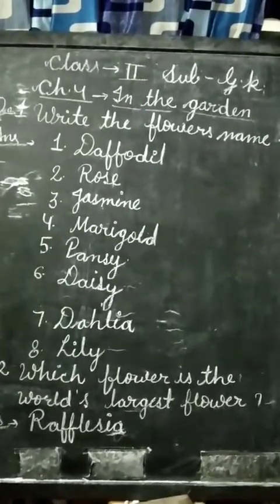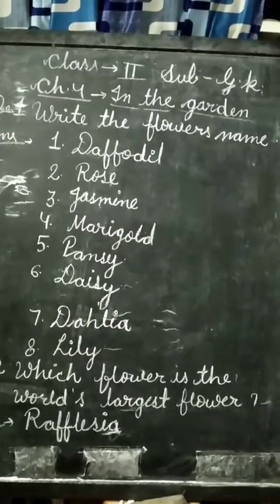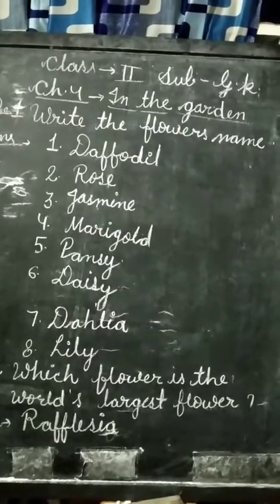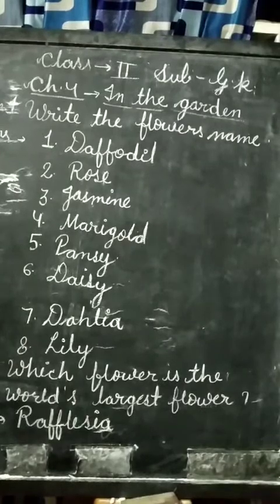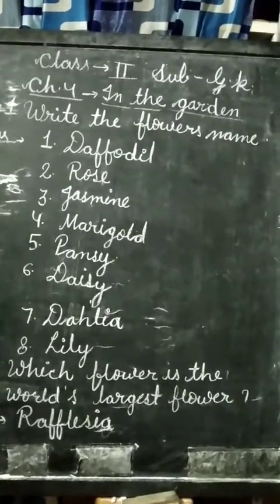Sixth number is D-A-I-S-Y, Daisy. Seventh number is D-A-H-L-I-A, Dahlia. Eighth number is L-I-L-Y, Lily.